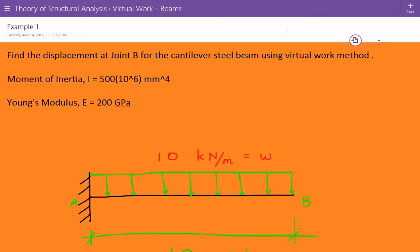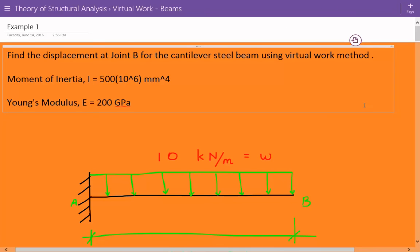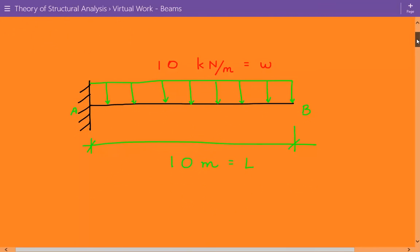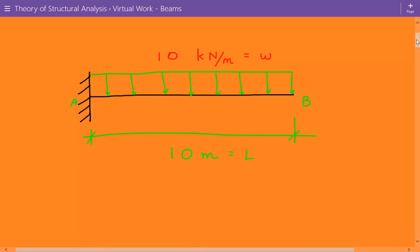The moment of inertia, I, is equal to 500 times 10 to the 6 millimeters to the 4th power. And the Young's modulus, E, is equal to 200 gigapascals. So here's our cantilever beam, and we have a distributed uniform loading equal to 10 kilonewtons per meter, and we call that W. And the total length is 10 meters, and we call that L.